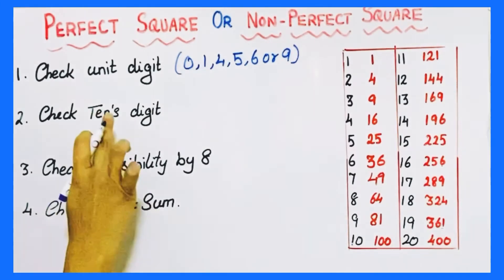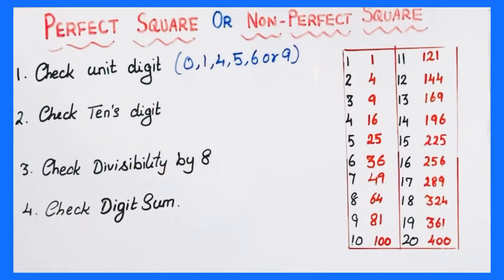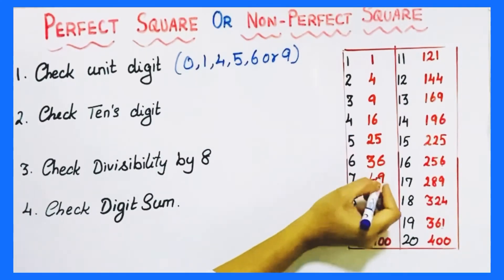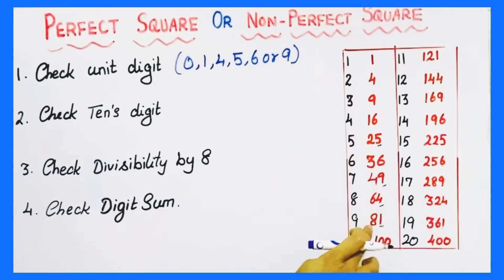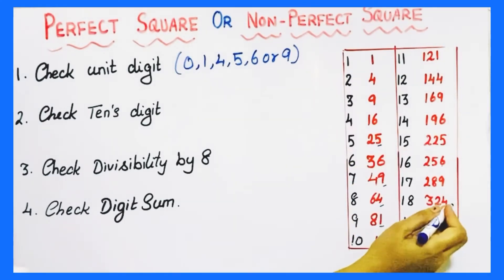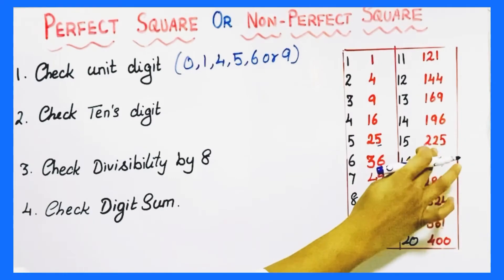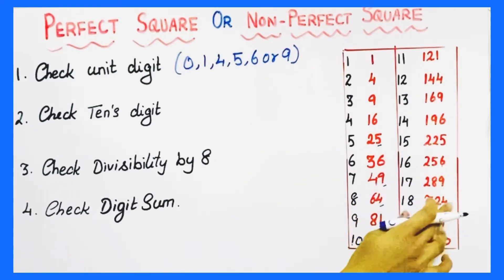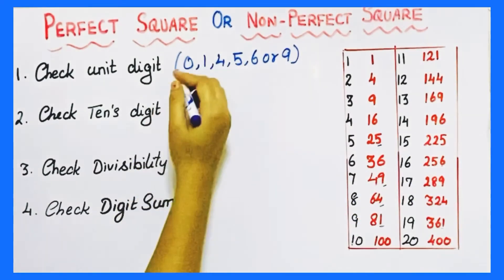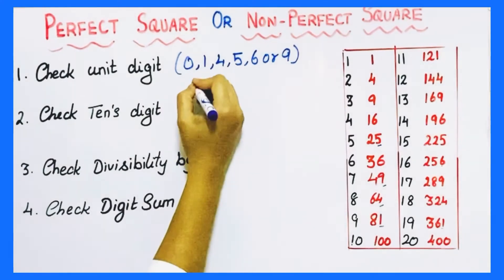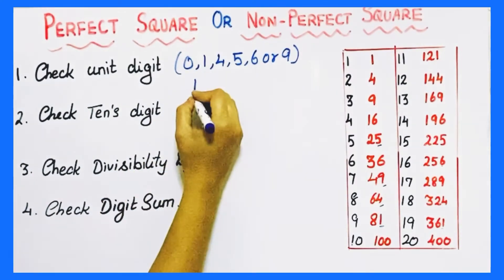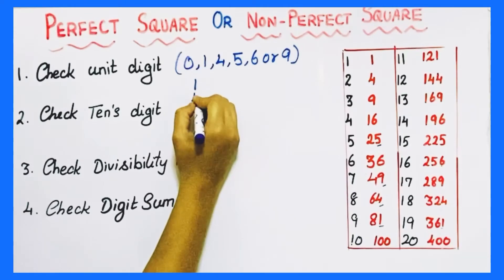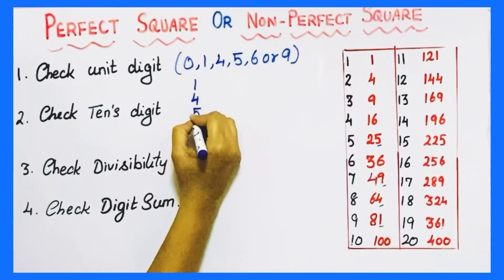Next, if you look at the tens digit of perfect square numbers: if the unit digit is 1, 4, 9, or 5, its tens place will be an even number. If the unit digit is 1, 4, 9, or 5, the tens place will be an even number — that is a perfect square.